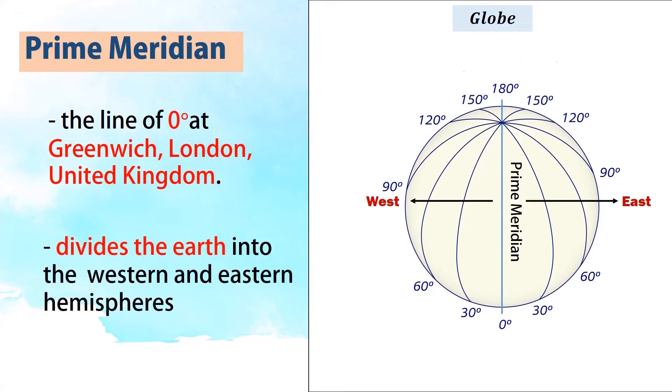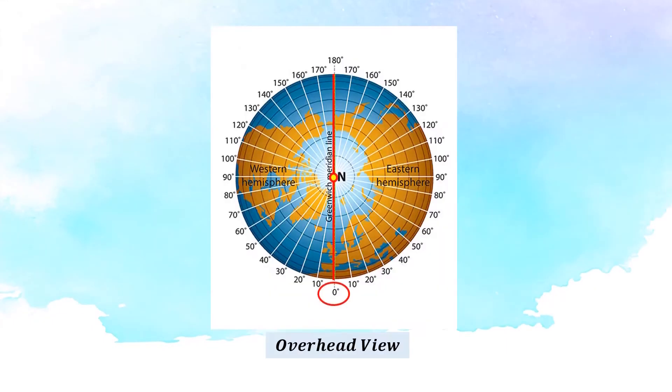It divides the earth into the western and eastern hemispheres. From 0 degrees up to 180 degrees west is the western hemisphere. On the other hand, from 0 degrees to 180 degrees east is the eastern hemisphere.